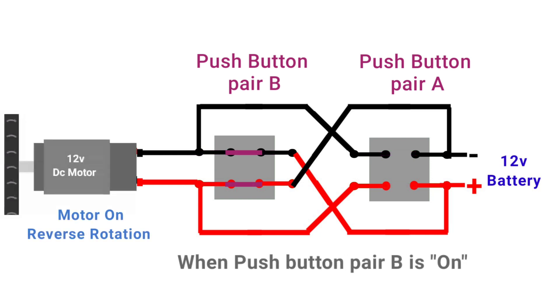Now push button pair B is on. So the positive terminal of the battery is connected to the negative terminal of the motor, and negative to the positive terminal. So motor will rotate in reverse direction.